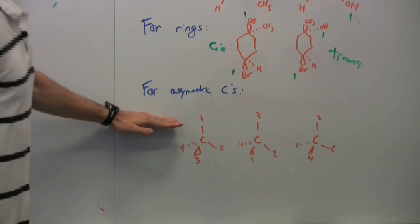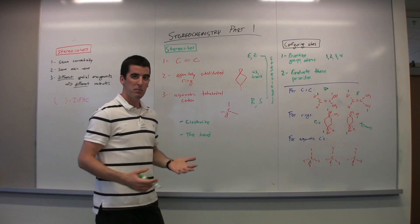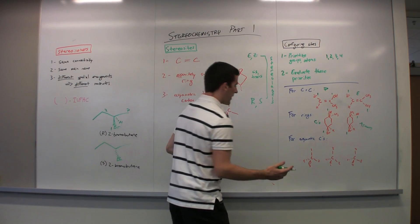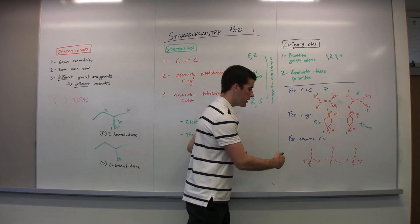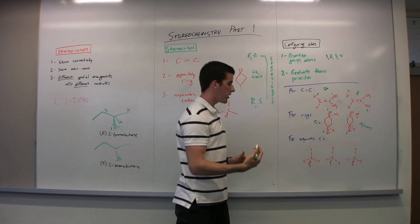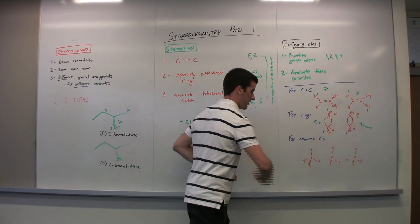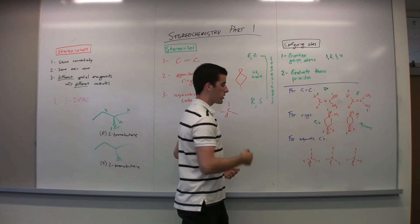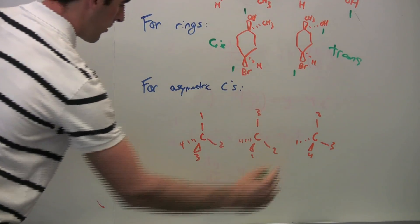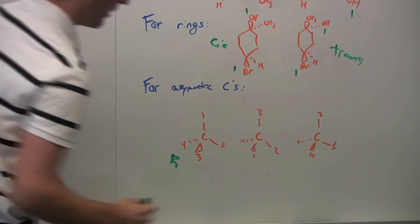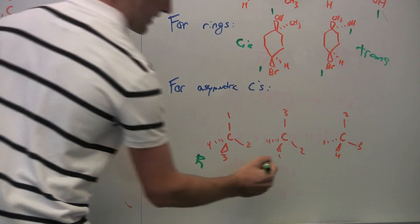Now going on to asymmetric carbons — the ones you'll see the most. You can use either the clockwise or hand method. For the clockwise method: if number four is into the board and you go around clockwise with priorities one, two, three, you get the R configuration. If you go counterclockwise with number four into the board, you get the S configuration. In our first example, number four is into the board and we go clockwise — that's R. In the other example, four is still in the board but we go counterclockwise, so it gets the S configuration.